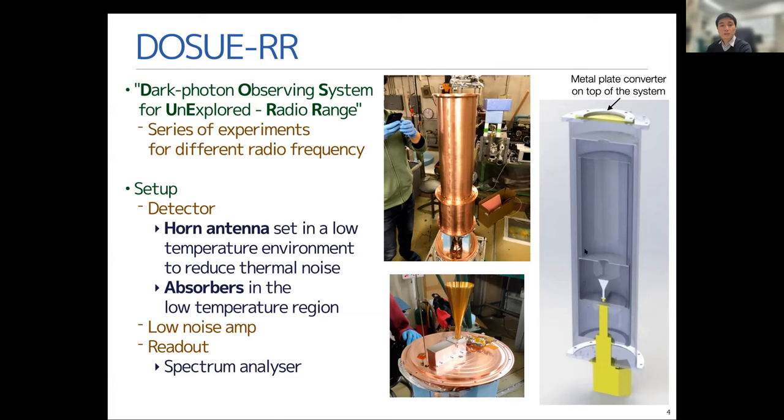Some absorbers are also set in the low temperature region to reduce the stray light from the window of the chamber here. The thermal noise now is mitigated. You can see some pictures of those low temperature regions and horn antenna.